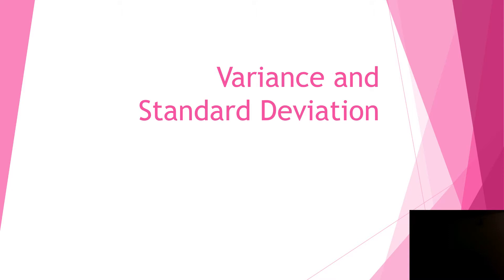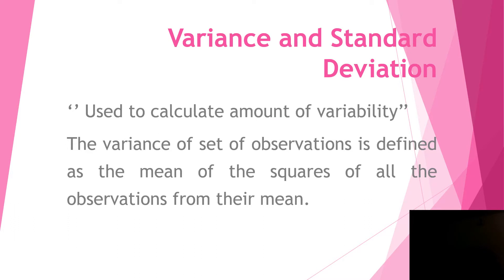So what is variance and standard deviation? We will simply define it: variance and standard deviation are used to calculate the amount of variability. The variance of a set of observations is defined as the mean of the squares of all the observations from their mean.